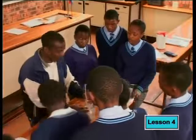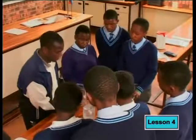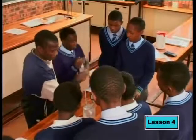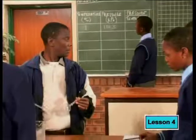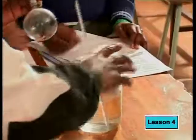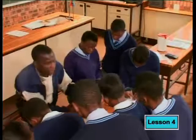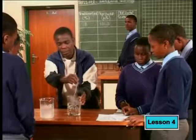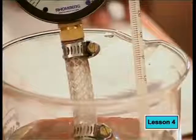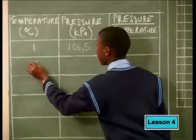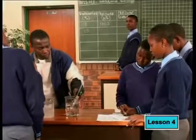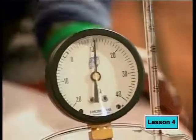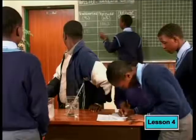Now we get to ordinary tap water. Our next reading would be the temperature of tap water, and we also look at the pressure. Let's give it some time to settle. The temperature of the tap water is 15 degrees Celsius. And the pressure is 111 kilopascals.